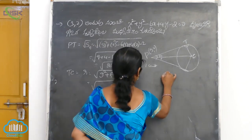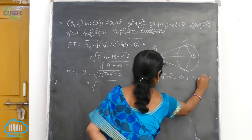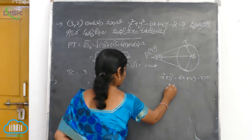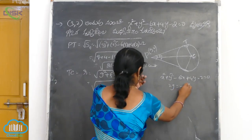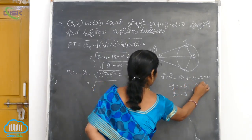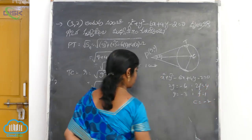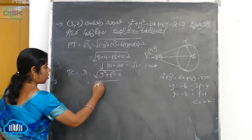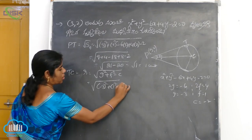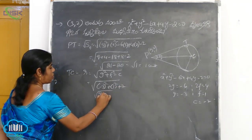x square plus y square minus 6x plus 4y minus 2. Comparing: 2g is equal to minus 6, so g is equal to minus 3. 2f is equal to 4, f is equal to 2. c is equal to minus 2. So the radius squared: g square plus f square minus c equals 9 plus 1 plus 2.